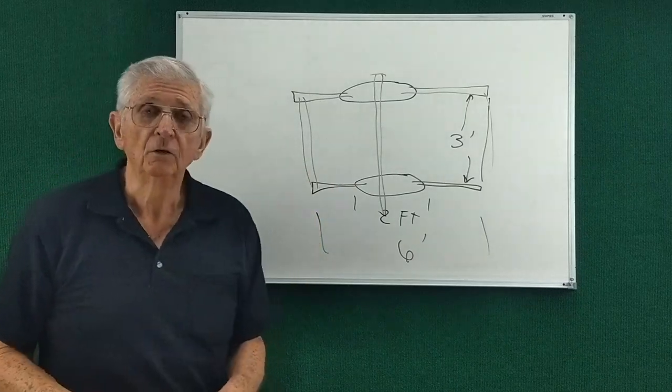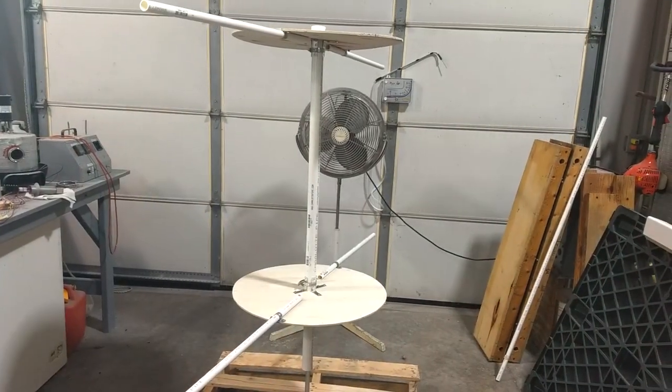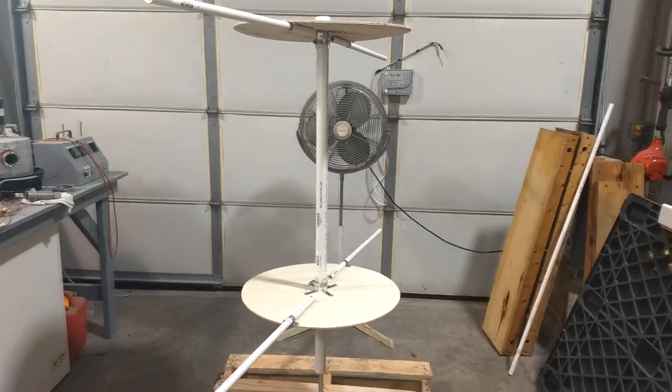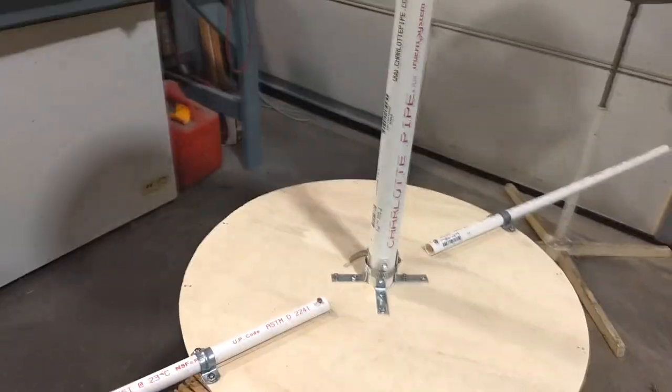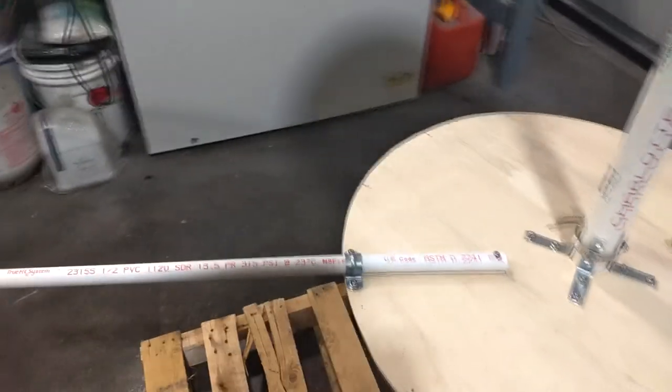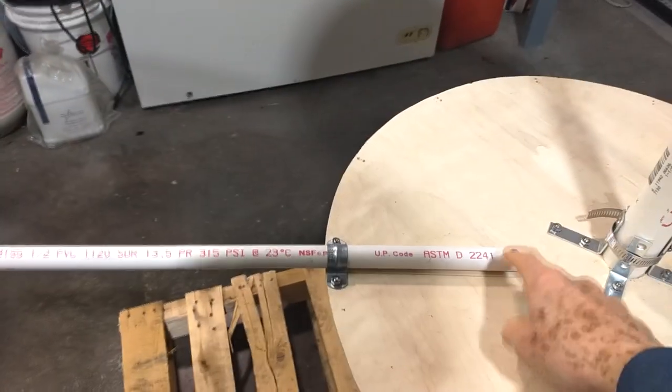Let's go look at the actual setup. Okay, here's the setup so far. Here's the wooden disks. I've attached radial arms here with a clamp and a screw.